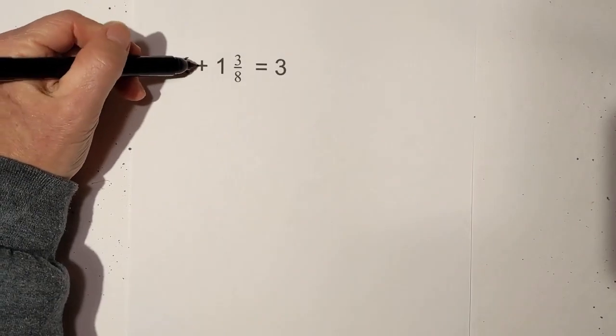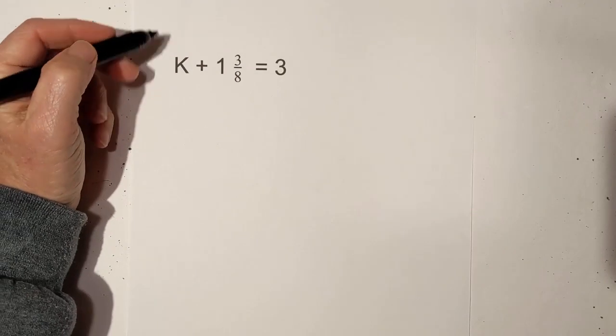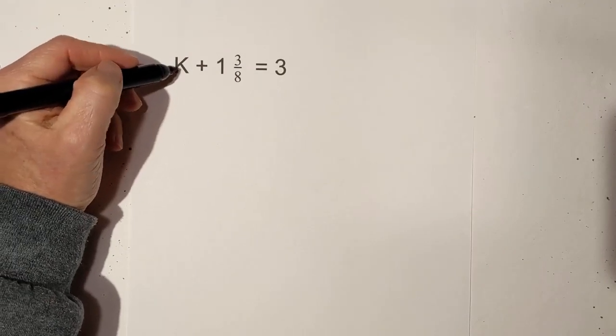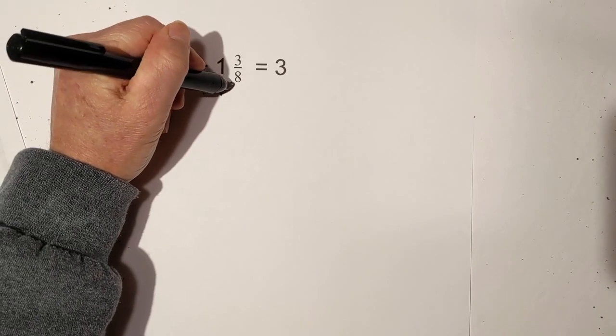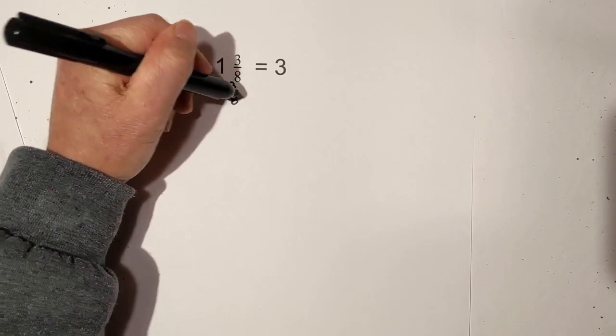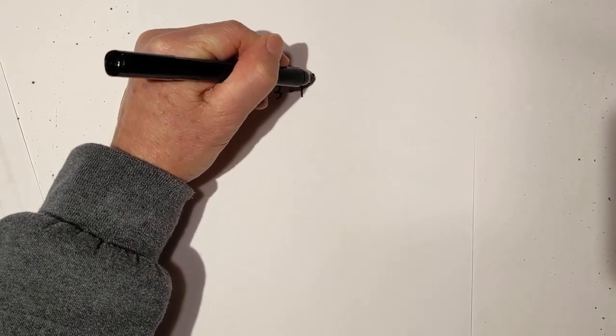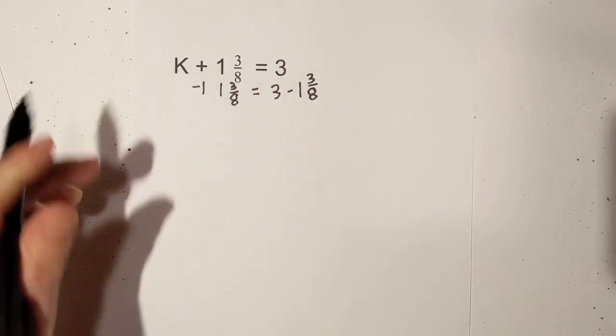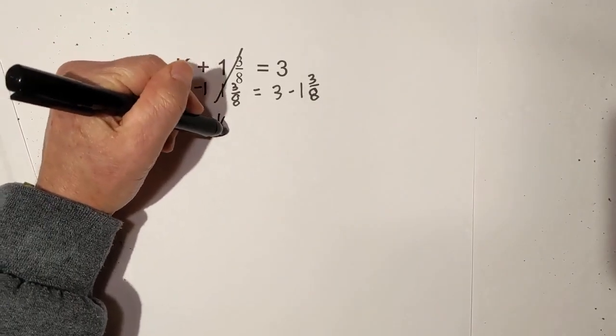We have k plus 1 and 3 eighths equals 3. To get k by itself we will subtract, so we will subtract 1 and 3 eighths from both sides. 3 minus 1 and 3 eighths. These cancel, so we have k.